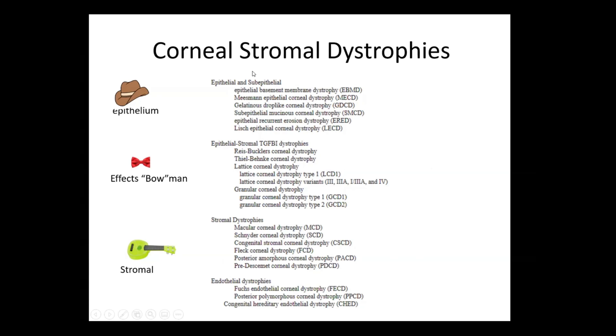Let's start with epithelial, sub-epithelial. If you see a hat, it's the top layer, so epithelium. Bowman is a bow tie, and stromal is strumming the guitar.